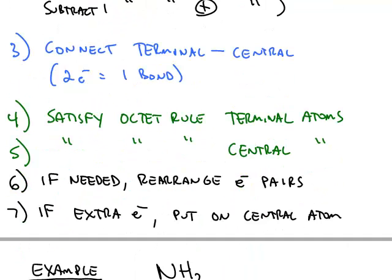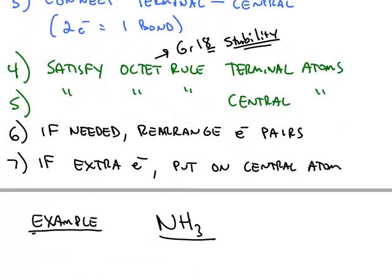Step three, connect the terminal atoms to the central atoms, and it takes always two electrons to make one bond. Then step four, satisfy the octet rule, and this octet rule is really the group 18 noble gas stability that we already have talked about. Satisfy that octet rule for the terminal atoms first, and then satisfy it for the central atom second.